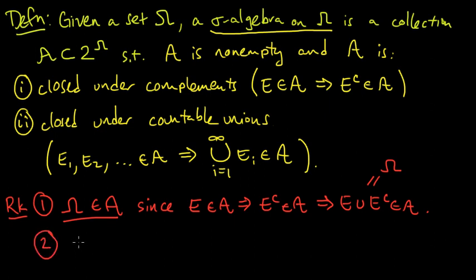Next, the empty set is also always in a sigma algebra. And this we can see just immediately from one. Because one implies that omega is in A, and by condition one, the complement is also in A. And the complement of omega is simply the empty set.